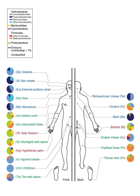They include bacteria, archaea, fungi, protists and viruses. Though micro-animals can also live on the human body, they are typically excluded from this definition.